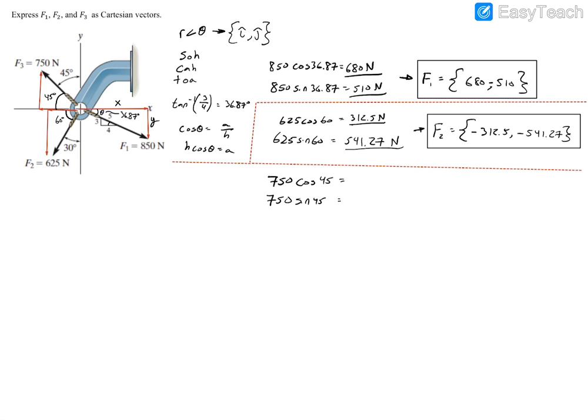And, therefore, plug this into your calculator, and you'll have 530.33 newtons and 530.33 newtons. As a result, we have force F3 equals, open up our bracket, so our X is pointing to the left, so we have negative 530.33. And, our Y is pointing up, so we have 530.33.